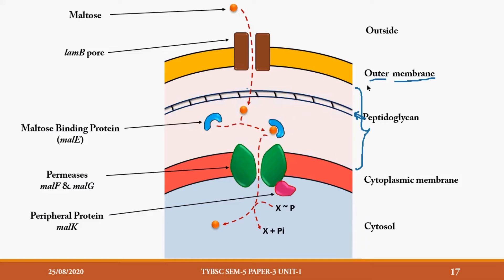The periplasm is the region between your outer membrane and your cytoplasmic membrane or plasma membrane. The pink color here is your cytoplasmic membrane or plasma membrane, and inside that you have your cytosol or cytoplasm. So: outer membrane, then peptidoglycan layer, then cytoplasmic membrane, and inside is the cytoplasm.